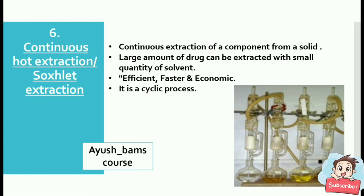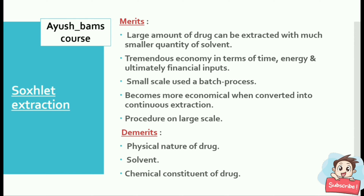The sixth method is continuous hot extraction or Soxhlet extraction — continuous extraction of a component from a solid. A large amount of drug can be extracted with a small quantity of solvent, making it efficient, faster, and economical. It is a cyclic process. Merits include extraction of large amounts of drug with much smaller quantities of solvent and tremendous economy in terms of time, energy, and financial input. Small-scale batch processes become more economical when converted into continuous extraction. Demerits relate to the physical nature of the drug, solvent, and chemical constituents.